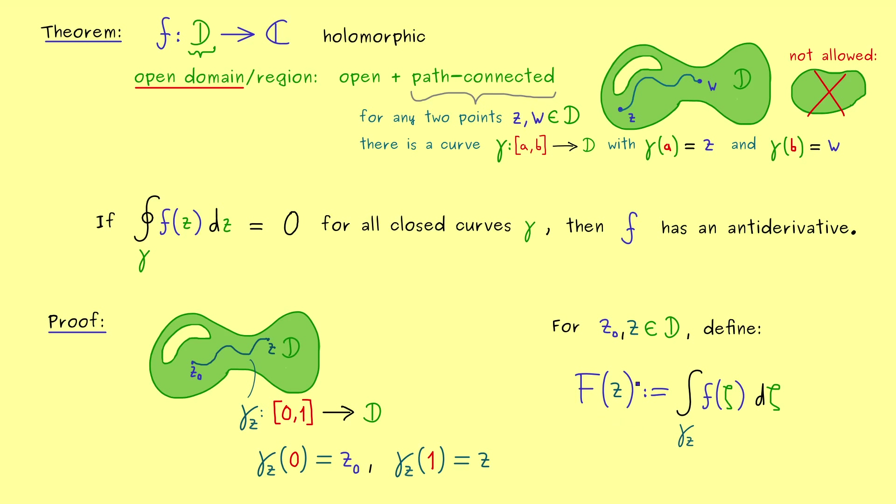Now, the lowercase z is already occupied, therefore we choose the lowercase zeta, the Greek zeta. Okay, but then the definition is finished, this here defines a new function capital F.